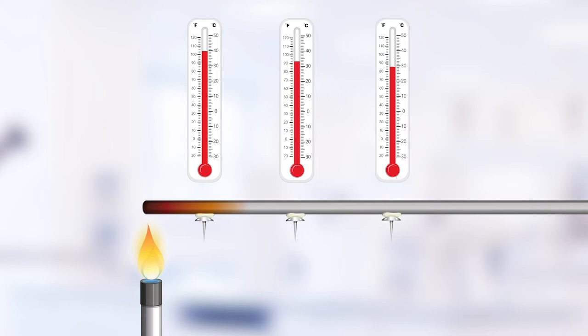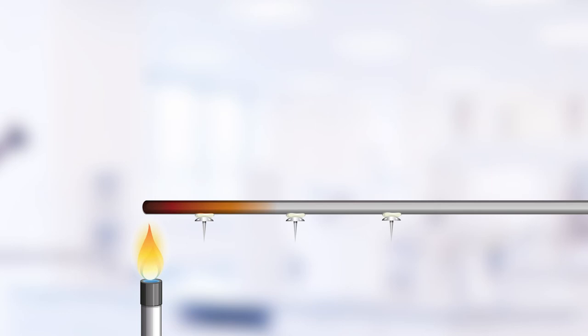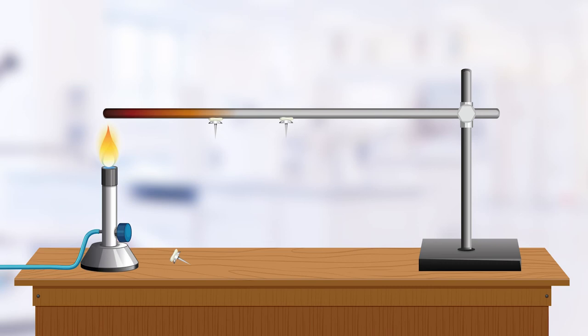We can see this as the temperature is highest at the left pin and lowest at the right pin. As the temperature increases, the candle wax melts and the pins fall off the rod.